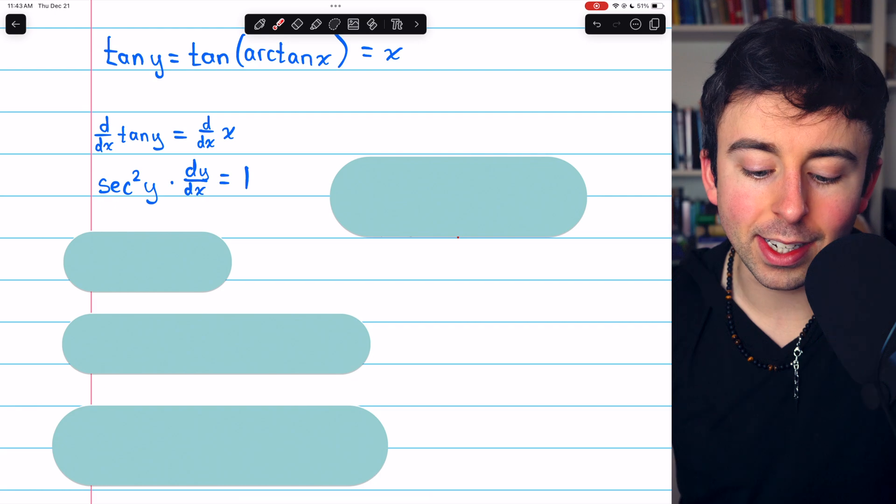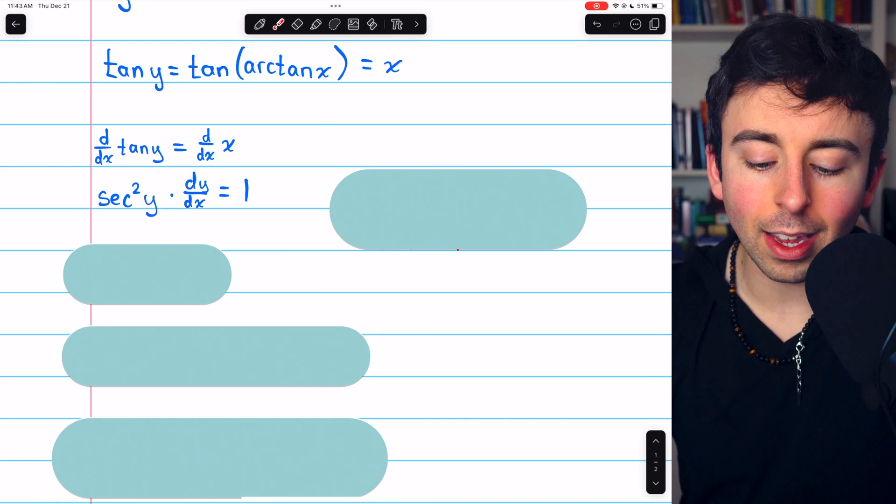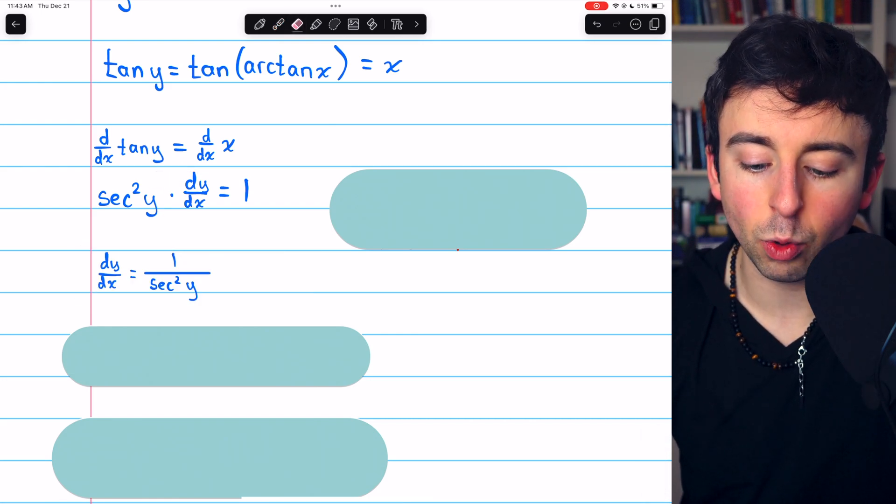We're trying to find dy/dx, because that's the derivative of arctan. So let's divide both sides of this equation by secant squared y.